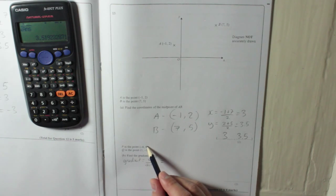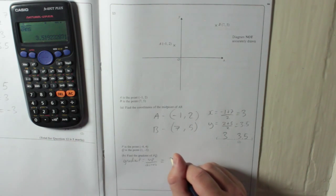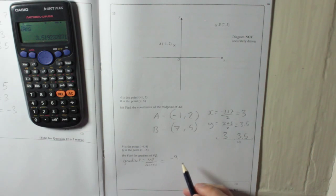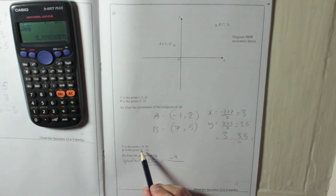It's going from 4 down to minus 5. That's minus 9 going down. And across, it's gone from minus 4. Remember, x is across. It goes from minus 4 to 1. So that is 5. So the gradient is minus 9 over 5.